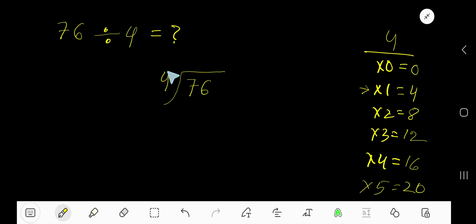76 divided by 4. Here 4 is a divisor, so we need the multiplication table of 4.